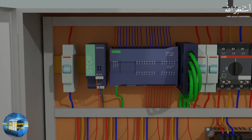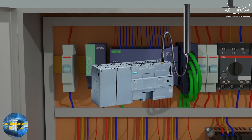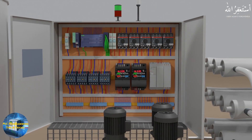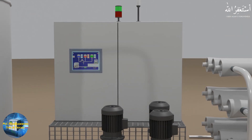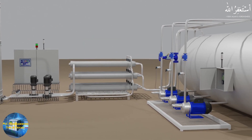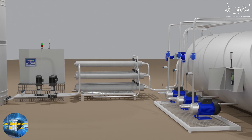A SCADA system can be PLC-based or RTU-based. PLCs are Programmable Logic Controllers and RTUs are Remote Terminal Units. These PLCs or RTUs receive data from the transmitters and sensors, and based on the current values and the logic written inside them, they make logical decisions to control the process, sending commands to control elements like control valves and pumps.